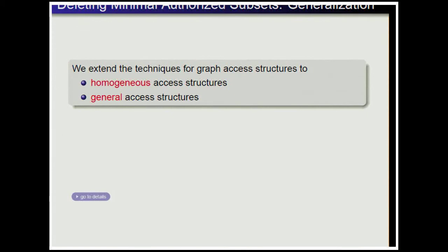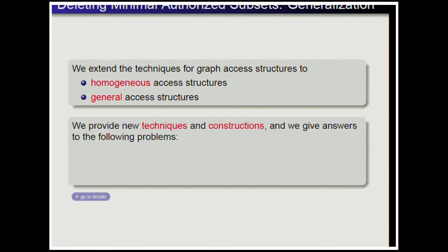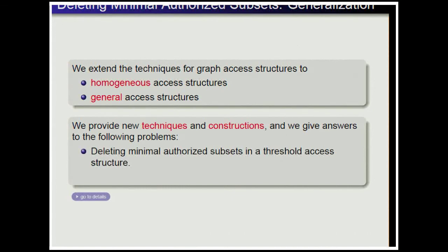We extended these techniques to homogeneous access structures — where all minimal authorized subsets are of the same size — and to general access structures. We provided new techniques and constructions, and gave answers to the problems of deleting minimal authorized subsets from a threshold access structure and from any access structure.